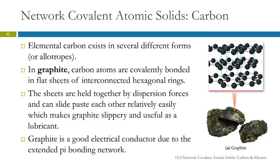Carbon is interesting because it forms several different forms called allotropes. There's graphite, which is what's in your pencil. In graphite, we have hexagonal rings of covalently bonded carbon atoms in sheets, and between the sheets are just intermolecular forces — dispersion forces — that hold the sheets together.